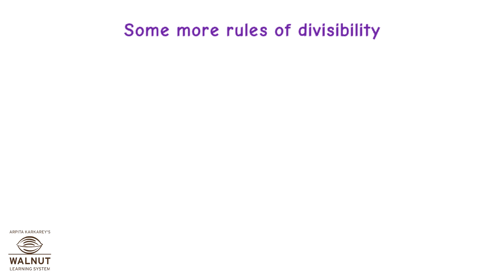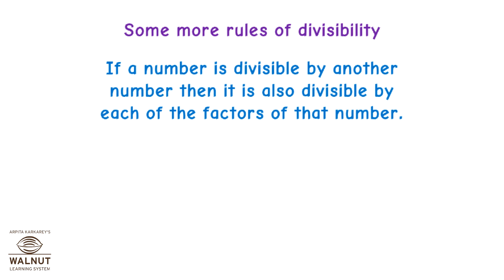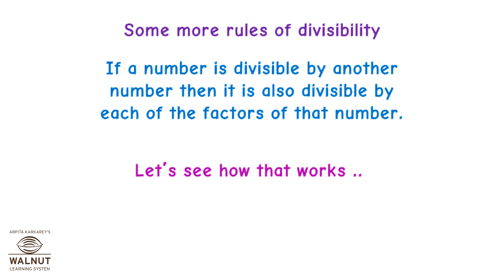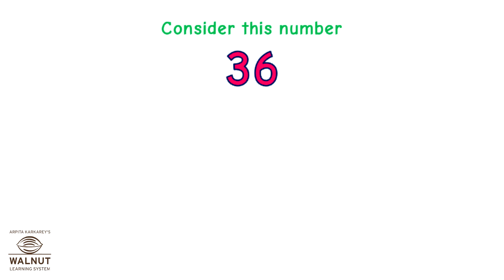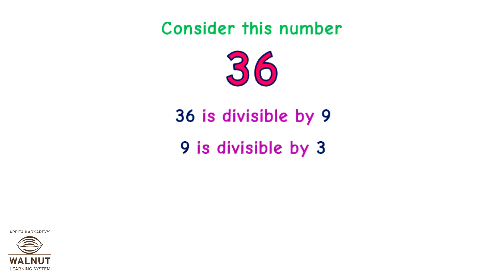Some more rules of divisibility: if a number is divisible by another number, then it is also divisible by each of the factors of that number. Let's see how that works. Consider the number 36. 36 is divisible by 9, and 9 is divisible by 3. Is 36 divisible by 3? Yes.